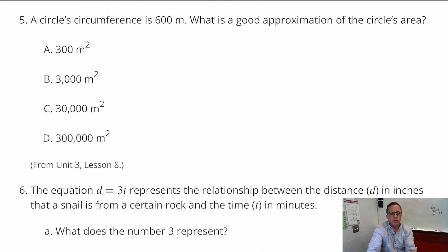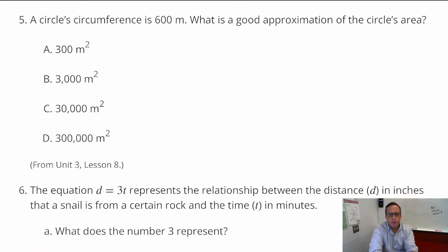Number 5, the circle circumference is 600 meters. So, what is a good approximation for the circles area? So, we're approximating, I guess. I'm not sure how it wants us to approximate, but I'm thinking that just for estimation purposes, we're going to think of pi as just 3. It's not that far off. But, if we want to just get a ballpark estimate, I think 3 would be a good number to use.